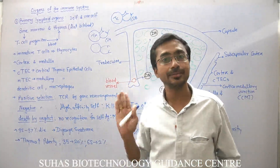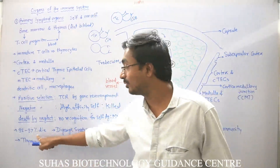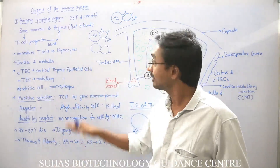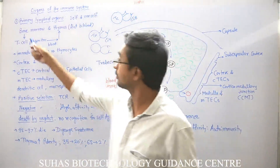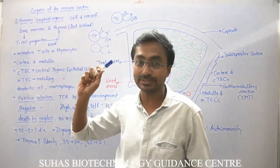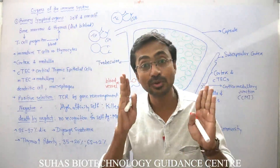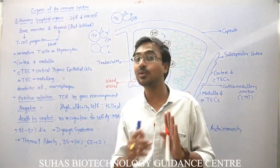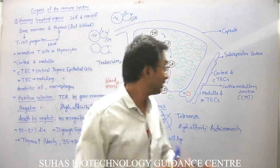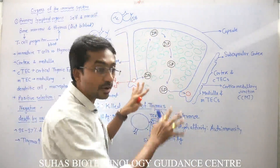It is seen that 95 to 97 percent of the T-lymphocytes that go into the thymus from the bone marrow through blood will die — they will be killed. Only 3 to 5 percent will come out and re-enter the blood circulation.